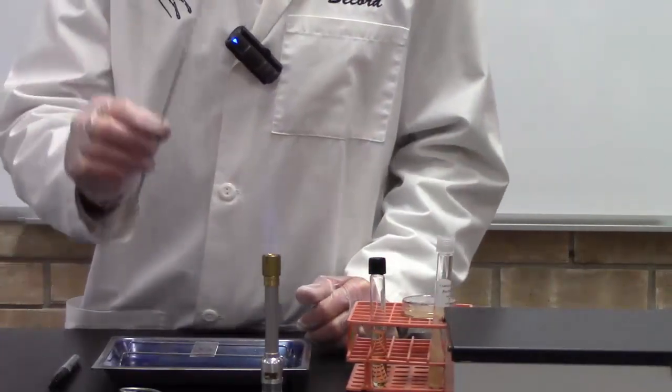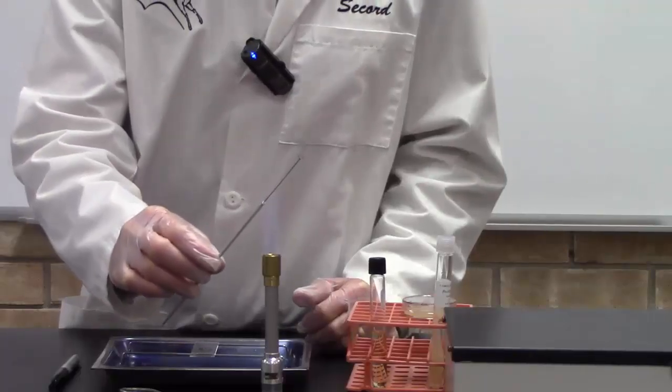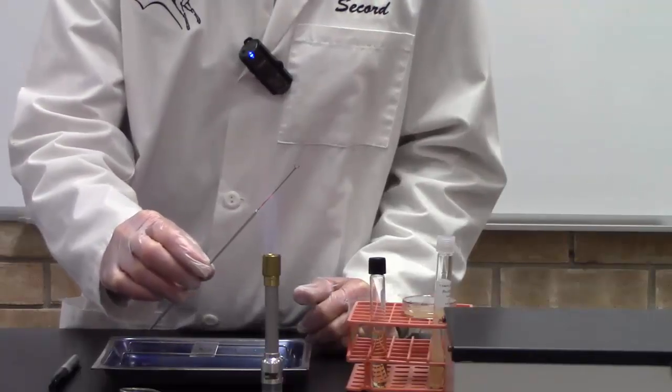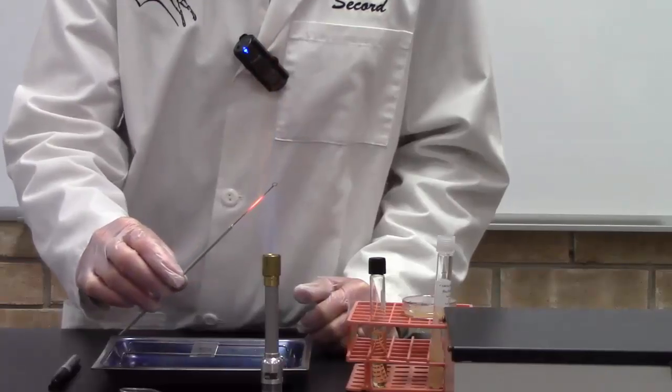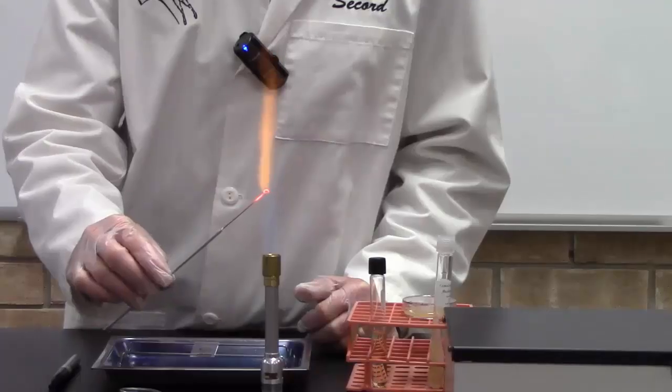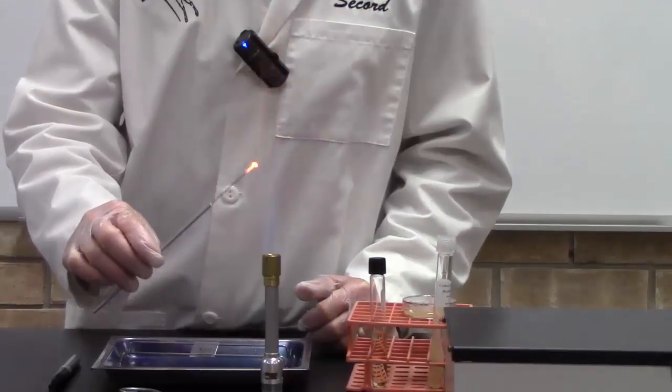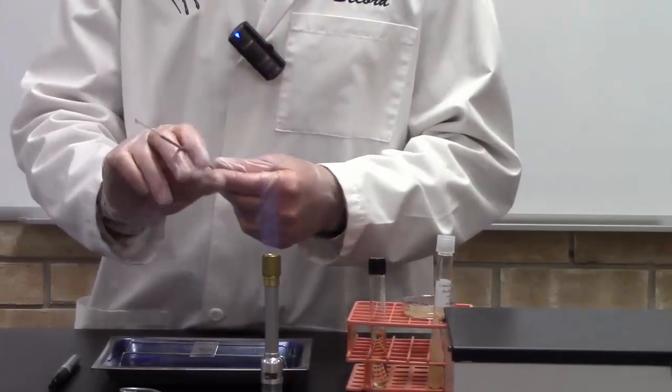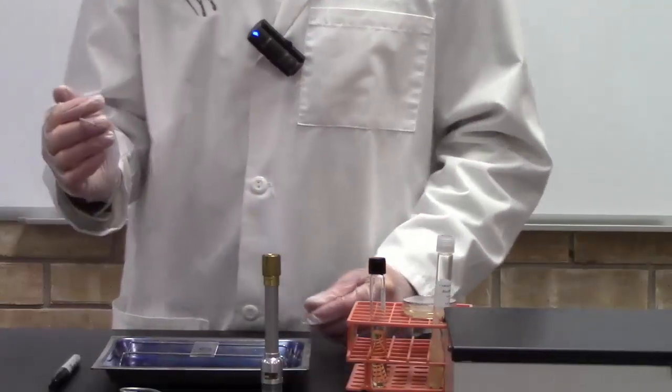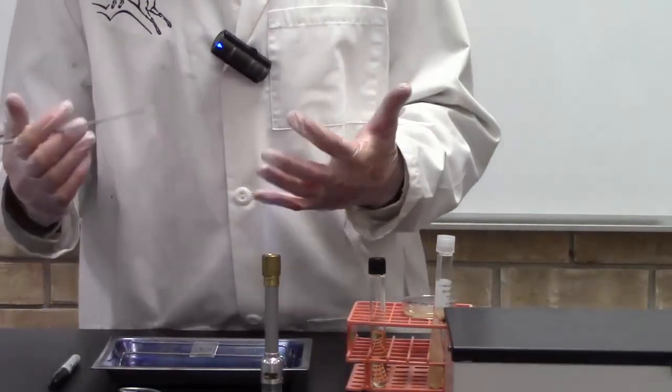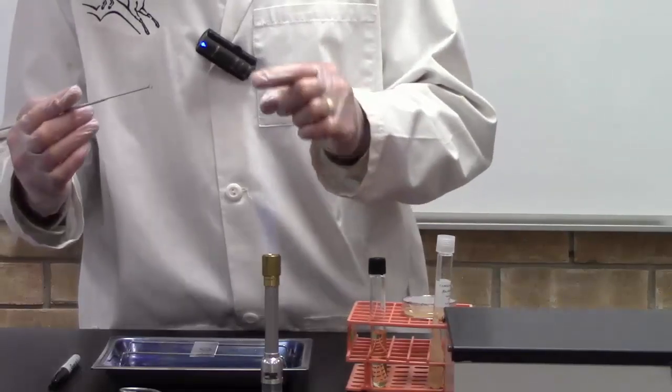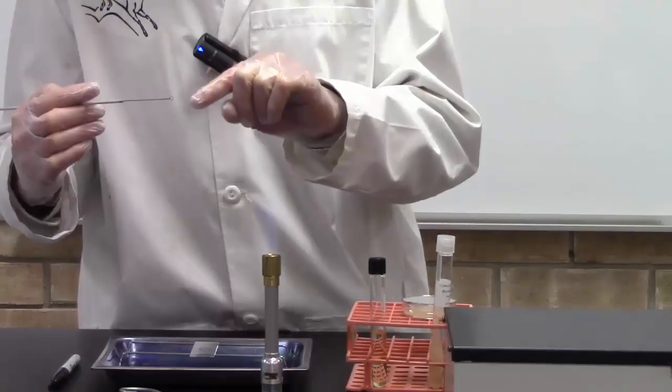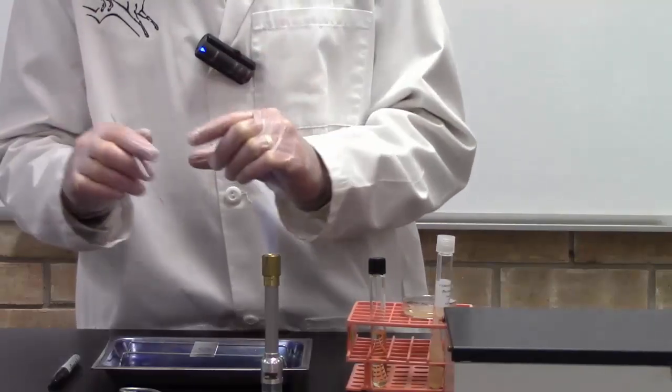Here's how you do it. Take your inoculating loop and sterilize it, so flame it. I start at the bottom of the loop and run it all the way through the tip. So I heat sterilize it, then I give it time to cool. Now through trial and error, I found out the perfect amount of water to use for bacterial smear is the amount of water that you can fit in the loop on the end of your inoculating loop.